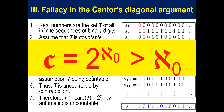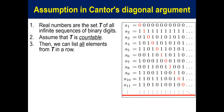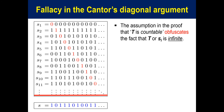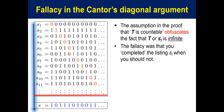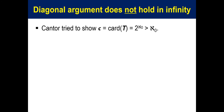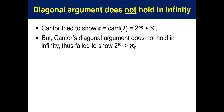Then, I showed a fallacy in Cantor's Diagonal Argument. Cantor's Diagonal Argument assumed that T is countable and we can list all elements from T in a row. But there is a fatal error in the argument. The assumption in the proof that T is countable presupposes the fact that T or s_i is infinite. The fallacy was that you completed the listing at index i when you should not have, because you cannot complete the listing as i cannot exist. Cantor tried to show C = |T| = 2^ℵ₀ is larger than ℵ₀, but Cantor's Diagonal Argument does not hold in infinity, thus failing to show 2^ℵ₀ is larger than ℵ₀.